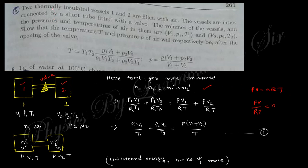The next question: two thermally insulated vessels 1 and 2 are filled with air and interconnected by a short tube with a valve. The volumes, pressures, and temperatures are V₁, P₁, T₁ and V₂, P₂, T₂. After opening the valve, what are the equilibrium temperature and pressure? The total moles n₁ + n₂ are conserved; using n = PV/RT gives the conservation equation.